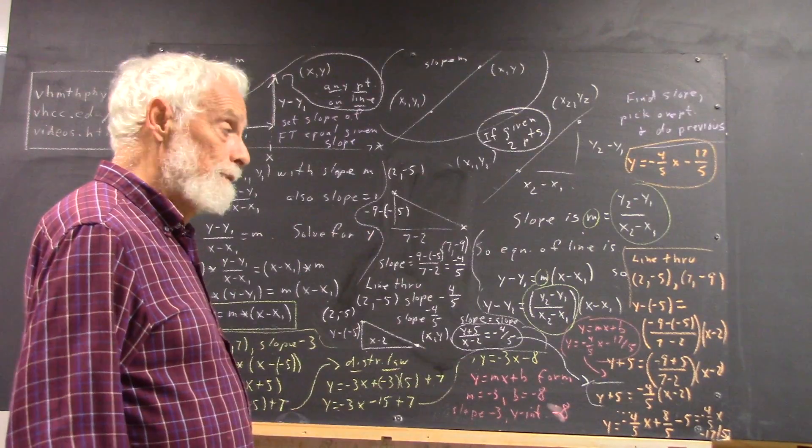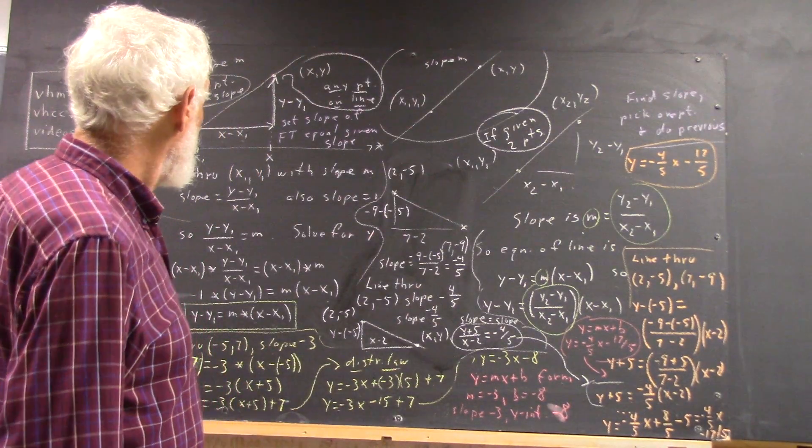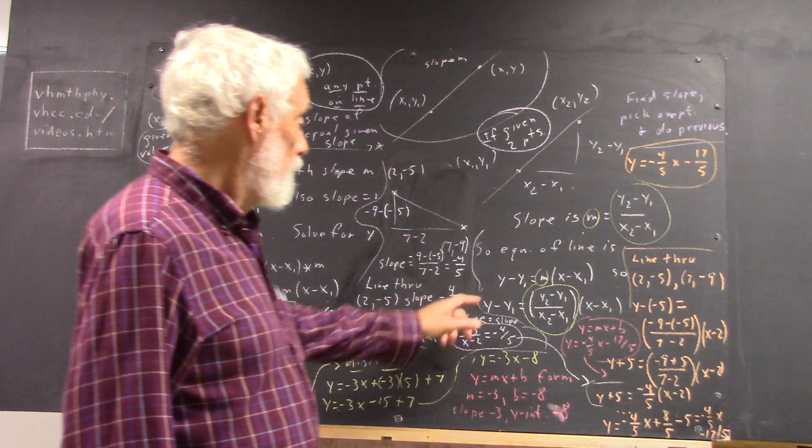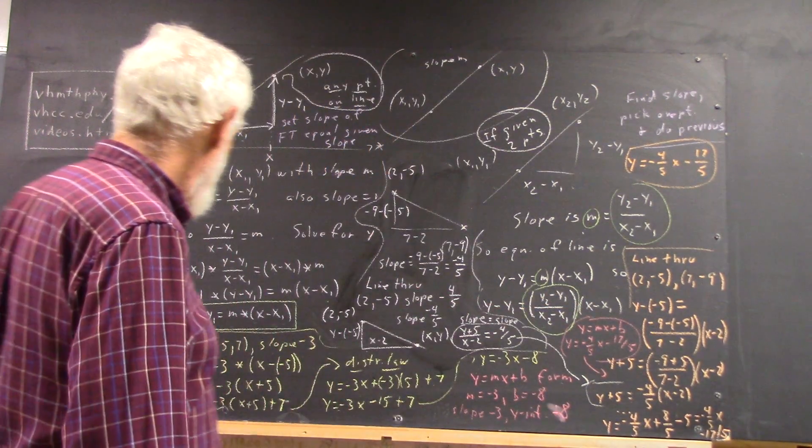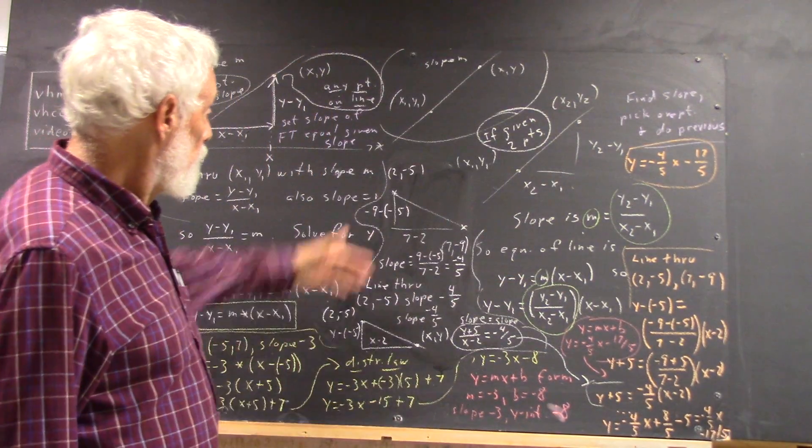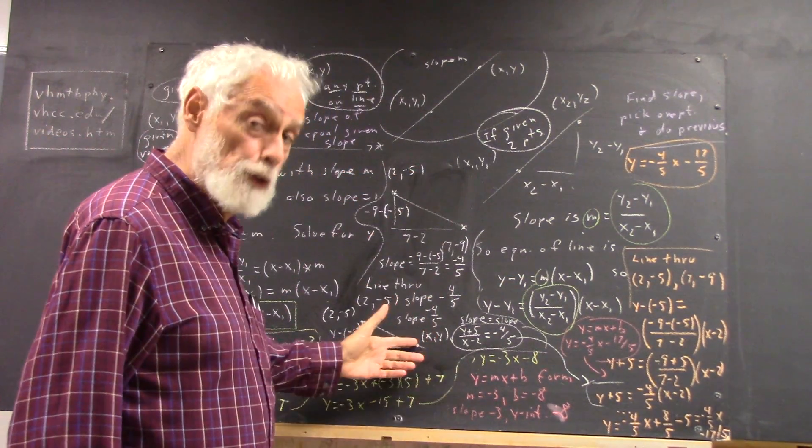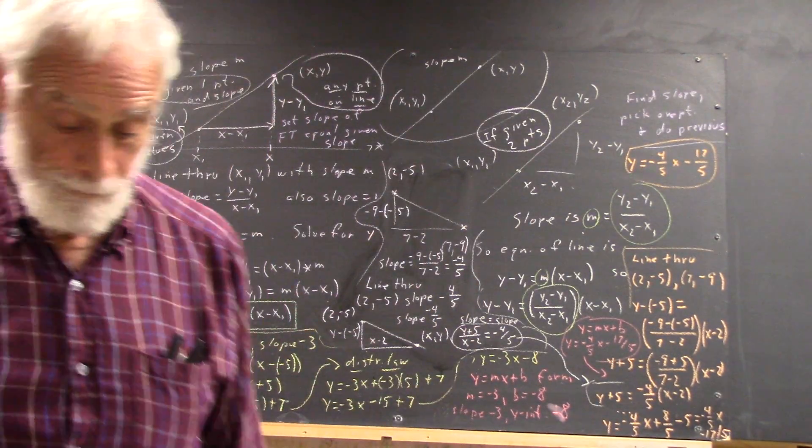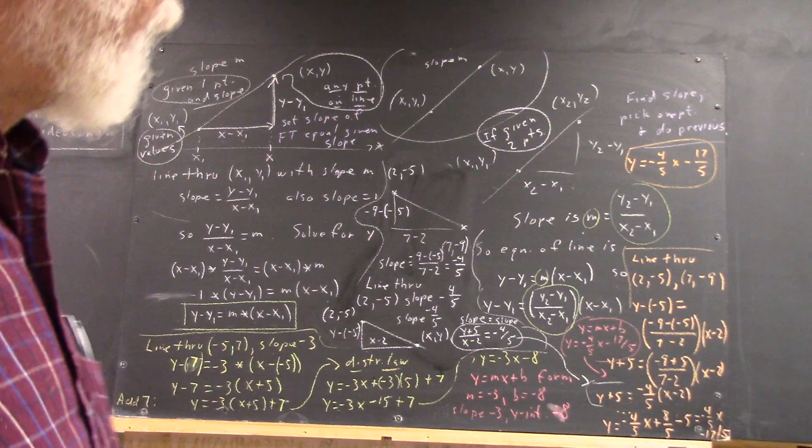So on a test, you can write it out in symbols and get the equation, or this equation. You can memorize this equation or this equation. Or you can just go directly to the picture, and you can get the equation, if you can construct the picture. Any of those is fine.